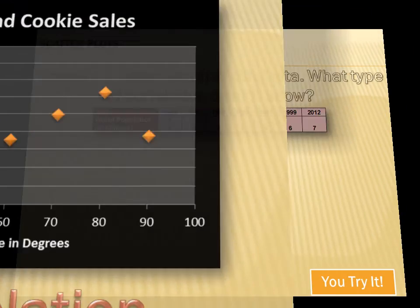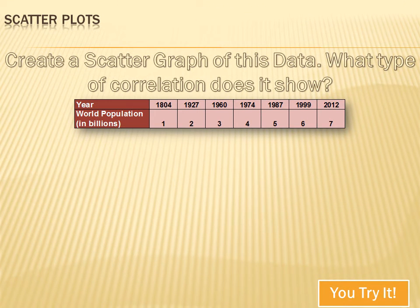Draw a scatter graph of this data, then try to figure out if there is a correlation and what kind of correlation it is. Hit your pause button, try the problem, and when you've finished, hit your forward key to move on to my answer.